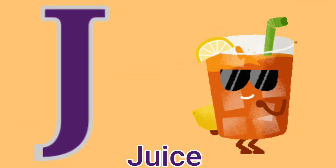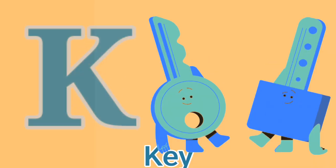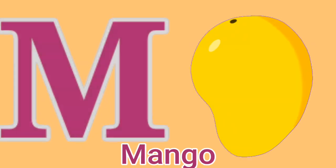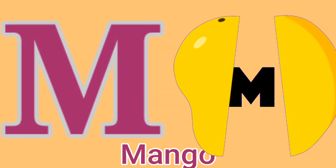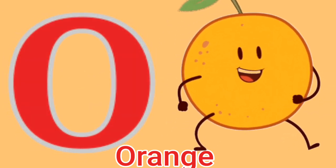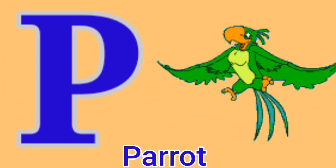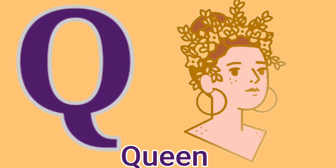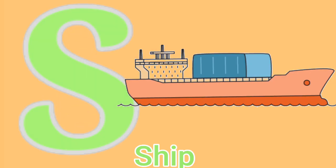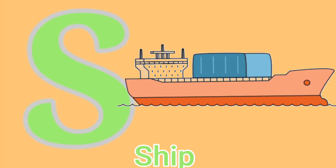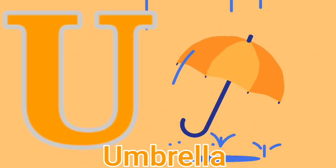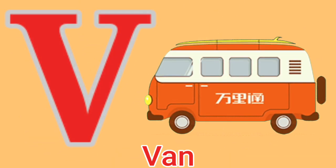J for Juice, K for Key, L for Lion, M for Mango, N for Nest, O for Orange, P for Parrot, Q for Queen, R for Rose, S for Sheep, T for Tiger, U for Umbrella.